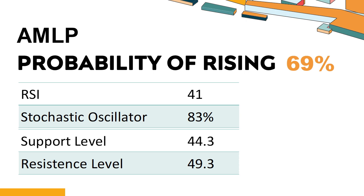An overbought condition occurs when a stock's price rises too fast and too high in a short period of time and can be a sign that buying pressure has exhausted. The probability of AMLP share price rising is 69%. When the probability of rising is higher than 50%, the stock has a higher chance of rising. Combining multiple technical analysis indicators, AMLP has two bullish signals and five bearish signals.